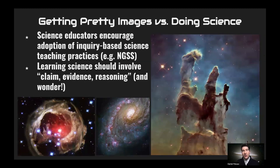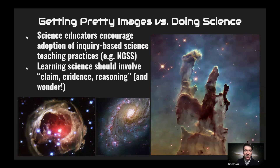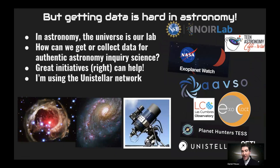In citizen science and astronomy, there is a difference between getting pretty images and doing science, and how we would like science education to work in the classroom. We want to encourage the adoption of inquiry-based science teaching practices, such as the Next Generation Science Standards, or NGSS. Learning science should involve claim, evidence, and reasoning. And to add to that wonder, we want to quench curiosity and creativity too. However, getting data is hard in astronomy — the universe is our lab — so we need a telescope that can actually collect the data.